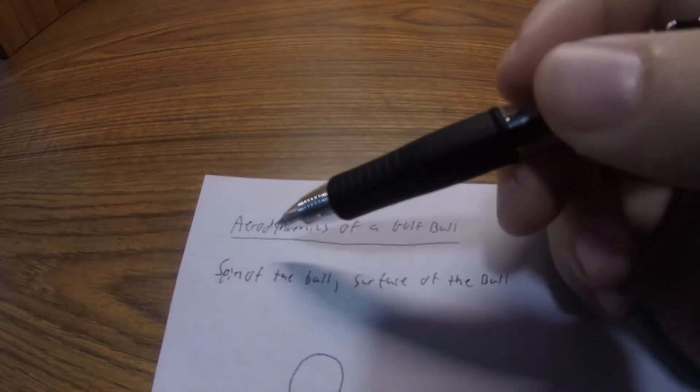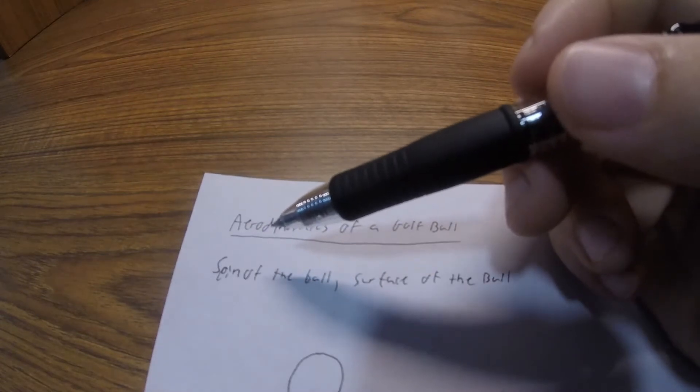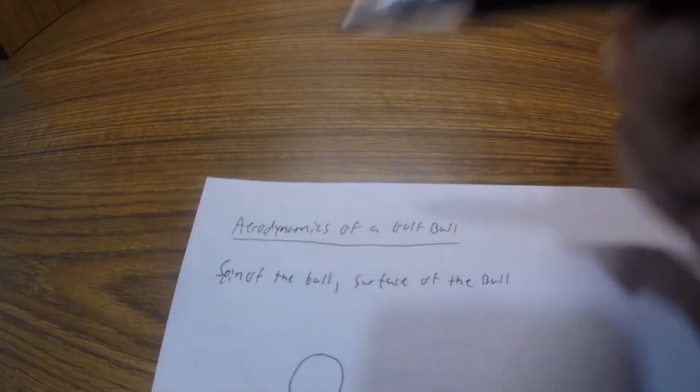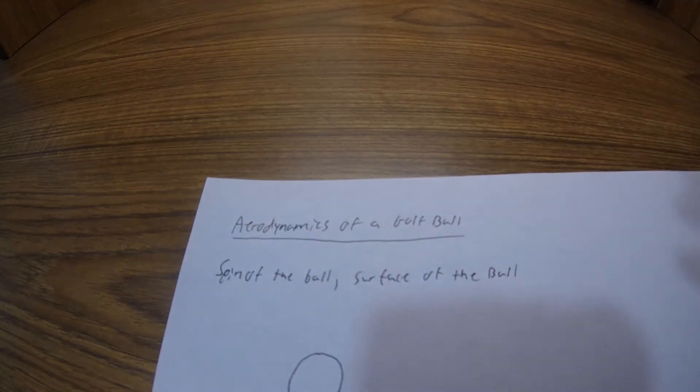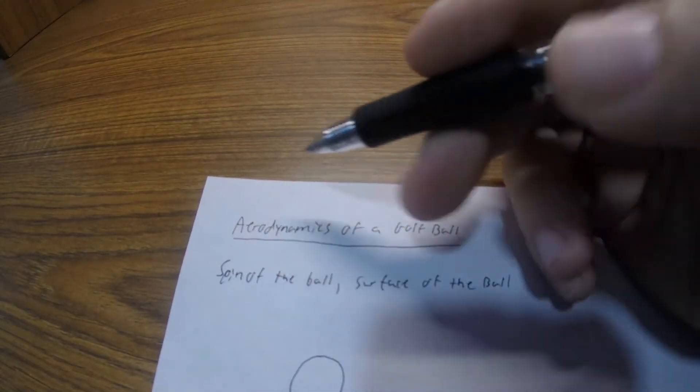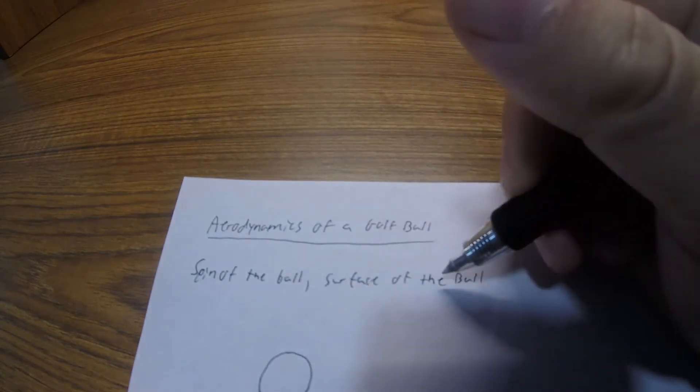I'm going to break it down into two different aspects. Obviously, there's the velocity you hit the ball at and the launch angle that you hit the ball at, which impacts how far the ball is going to go. But for the sake of this video, we're going to talk about the spin of the ball and the surface of the ball.